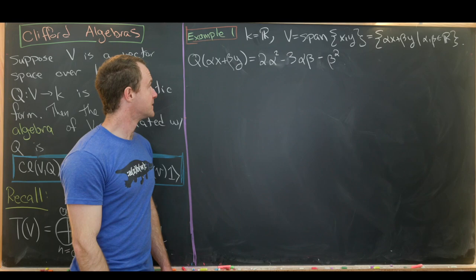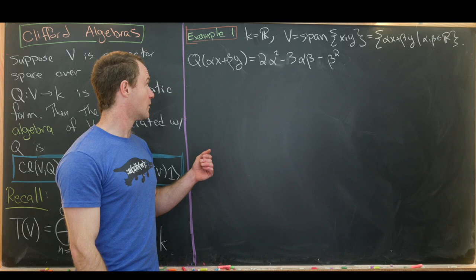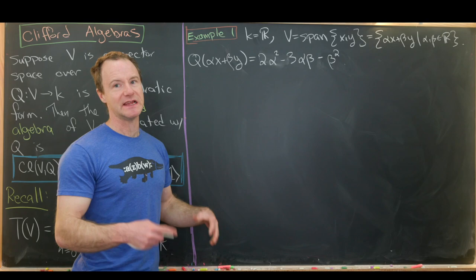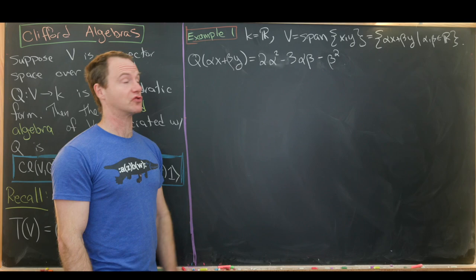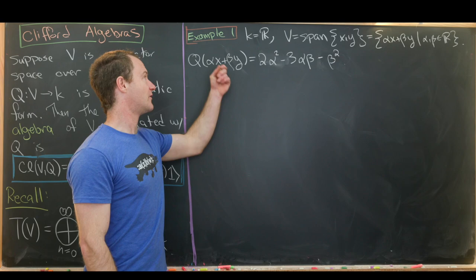When defining Q, it has to be able to input an arbitrary element and output a number. And because it's a quadratic form, the scalars that are multiples of our basis vectors need to occur with degree 2. So if we have Q evaluated at αx + βy equal to 2α² minus 3αβ minus β². Here we're looking at a very specific example, although you could have more arbitrary constants.